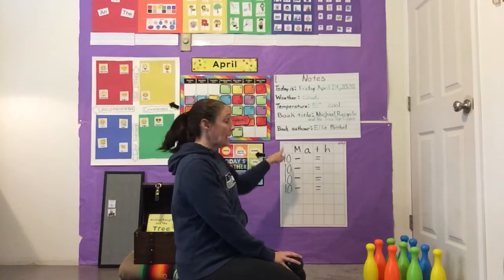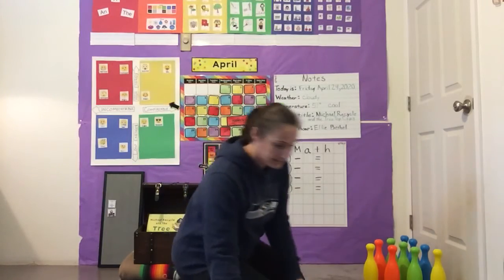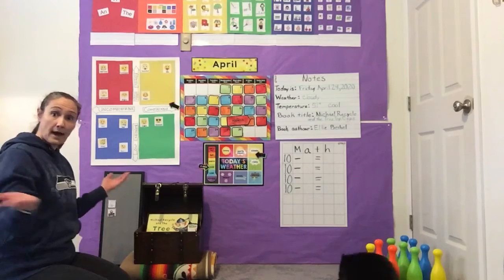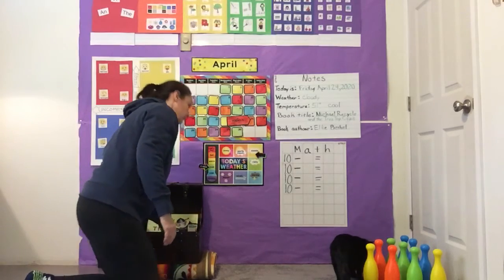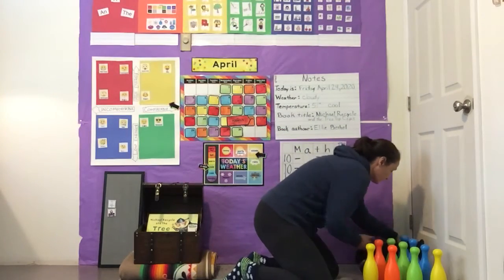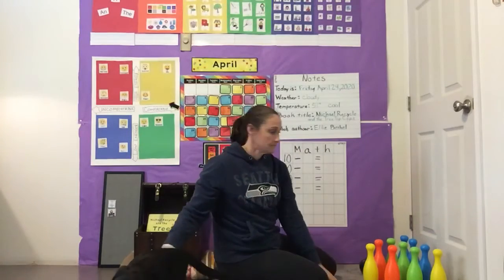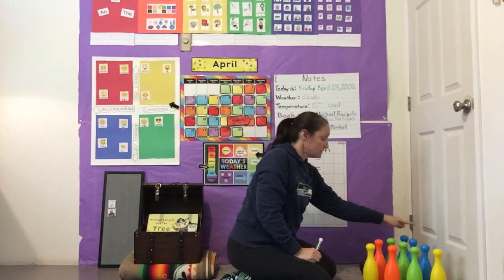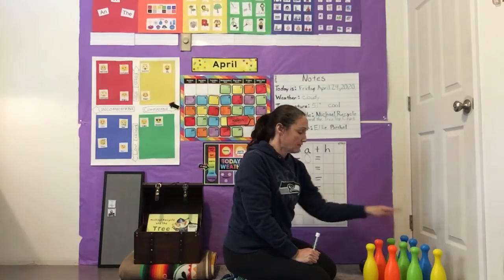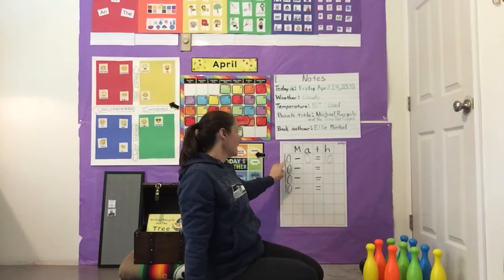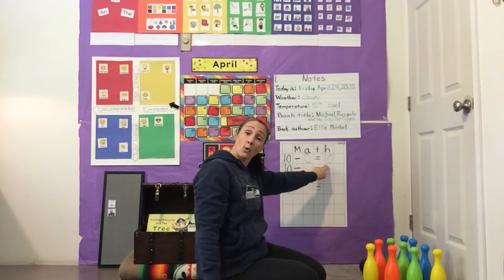Our number 10 is right here and I'm going to back up and roll the ball. Oh, I didn't hit any. So we're going to write our first number, which is zero. We're going to count how many are left standing: 1, 2, 3, 4, 5, 6, 7, 8, 9, 10 — we still have 10 standing. Let's say that math problem together: 10 minus zero equals 10. Great work.